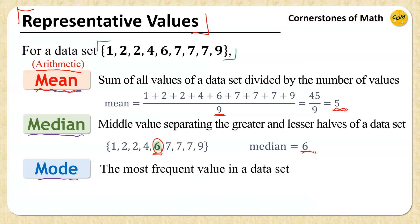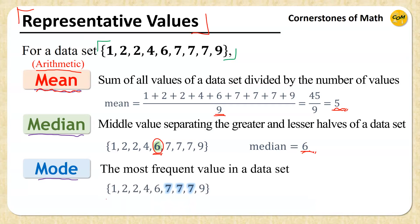Next, the mode is the most frequent value in a data set — that is, the value that appears most often. For our sample data set, the most frequently appearing value is 7, appearing 3 times in total. Therefore, the mode is 7.